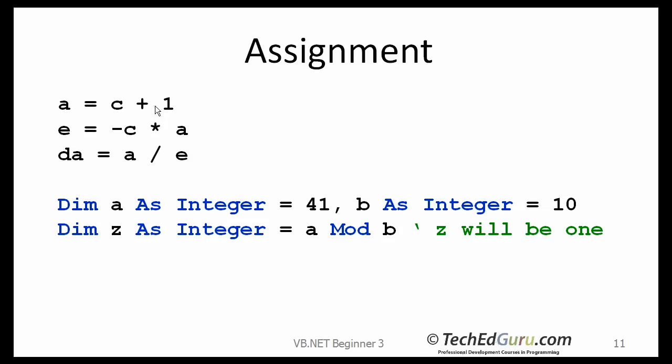Examples of assignment statements. On the first statement, I am taking the current value of C, adding 1 to that, and assigning the result to A. On the next line, I am assigning the result of this multiplication to E, and the result of the division to DA. Here is an example of how you can use the mod operator. A mod B, which will give you the remainder of that division. So if you divide 41 by 10, the remainder is 1. So that is what the mod operator would give you.